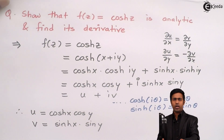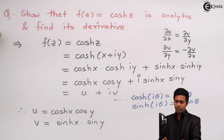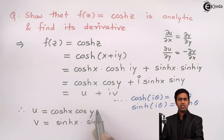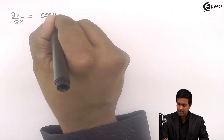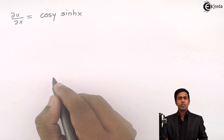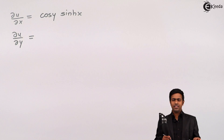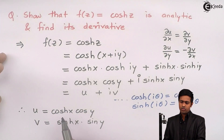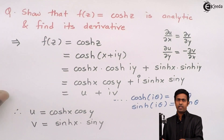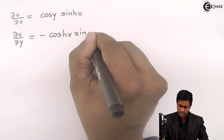First, differentiating u with respect to x partially: since y is constant, cos(y) is constant and the derivative of cosh(x) is sinh(x). So ∂u/∂x = sinh(x)·cos(y). Next, differentiating u with respect to y partially: since x is constant, cosh(x) is constant and the derivative of cos(y) is −sin(y). So ∂u/∂y = −cosh(x)·sin(y).